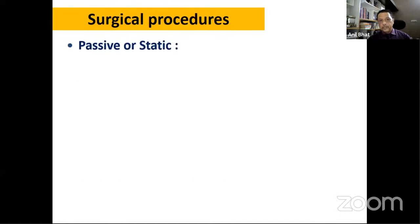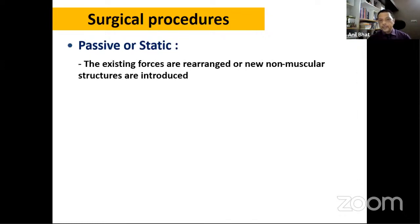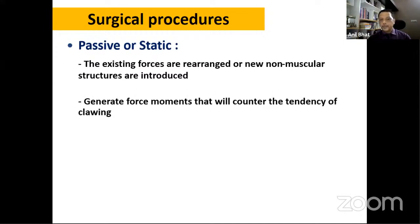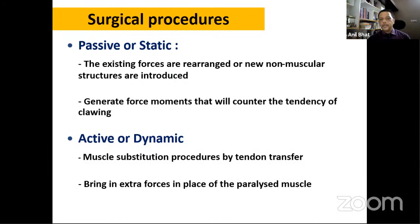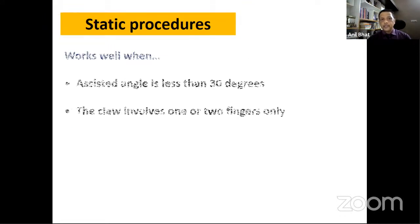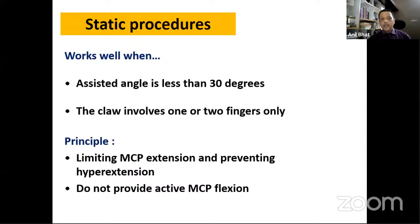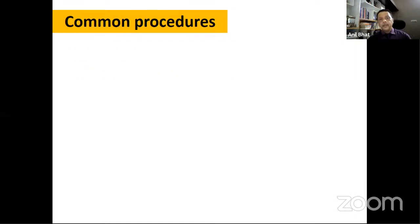Surgical procedures are either static (passive) or dynamic (active). Static procedures rearrange existing forces or introduce non-muscular structures to prevent MCP hyperextension without providing active MCP flexion. They work when the assisted angle is less than 30 degrees or when only one or two fingers are involved. The principle is limiting MCP extension to allow the existing extensor apparatus to extend the IP joints.